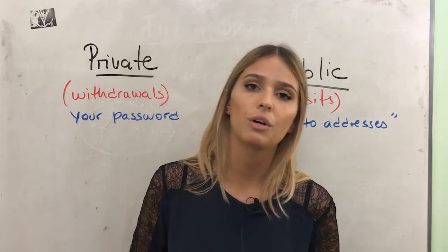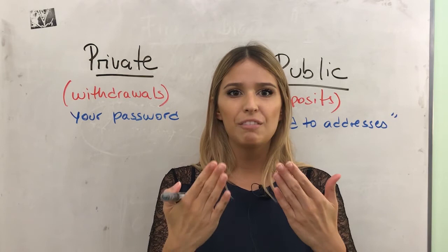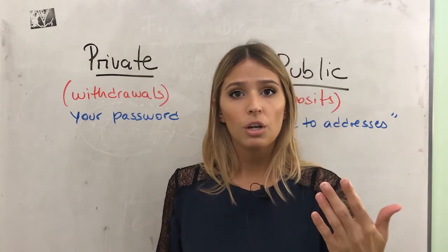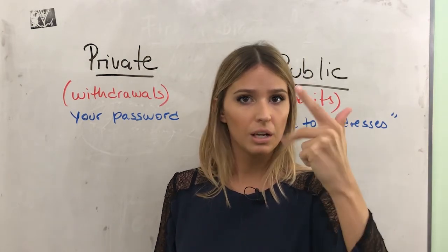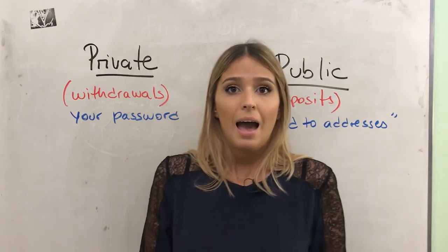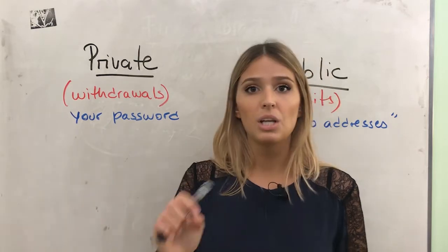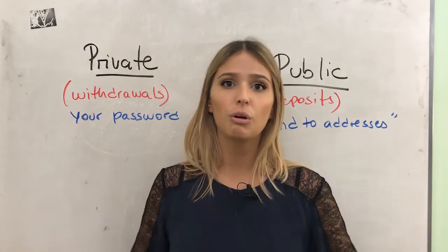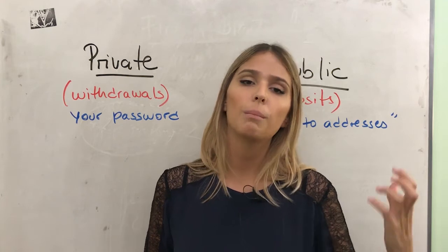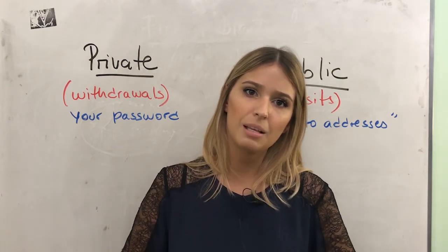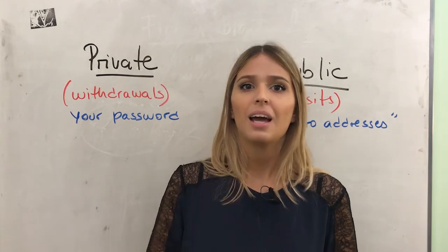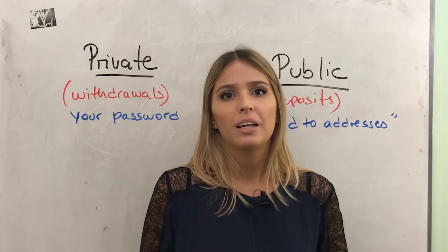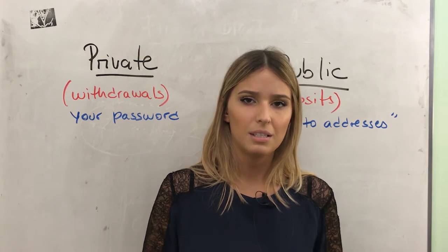Compare this to the financial system we have today, like a credit card. Think about how much information is exposed on the front and back of a credit card. On the front: your name, account number, expiration date — which can be thought of as your public key. On the back: those three little numbers and your signature — which are like your private key. For this reason, cryptocurrencies give us more security and privacy compared to the financial system we have in place right now.